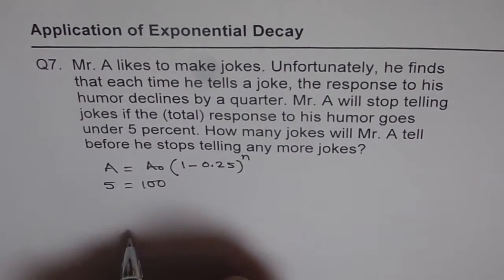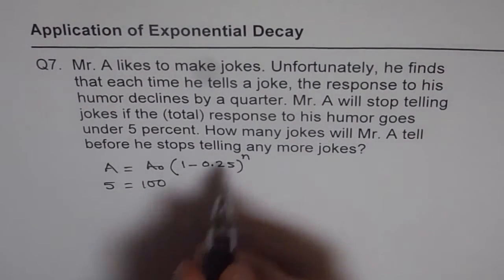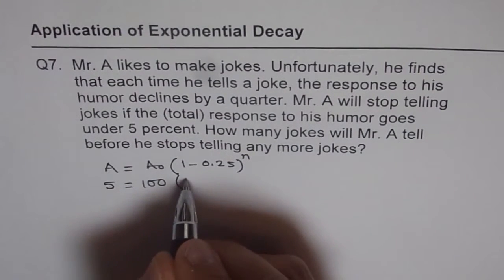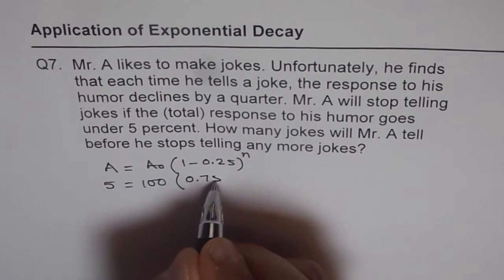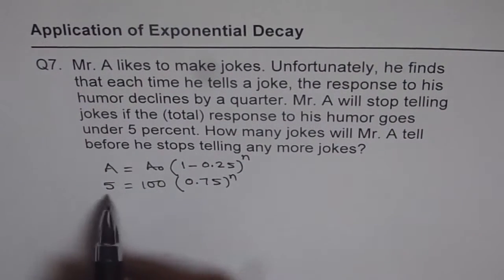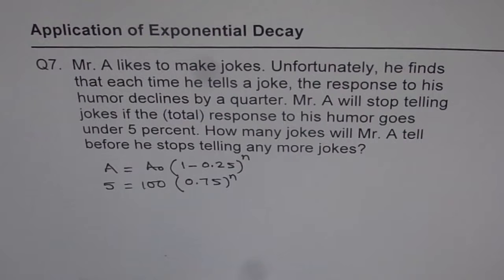So that is 5%. So whatever we get the value of n, it should be less than that. And 1 minus 0.25 is 0.75 and that is n. So that is when we are equating 5% here.